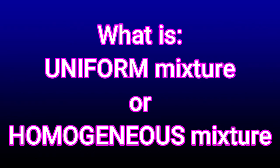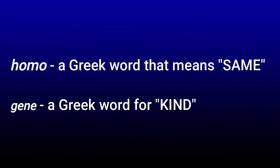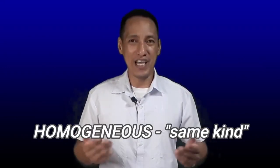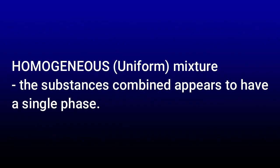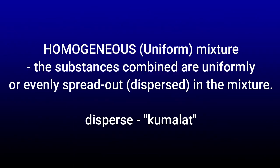What is a uniform or homogeneous mixture? Homo is a Greek word meaning same, and gene is another Greek word that means kind. So homogeneous means the same kind. Homogeneous mixture is a type of mixture that, after mixing, all the substances combined appear like one or a single kind of substance. It is called uniform mixture because the different substances combined are uniformly or evenly and totally spread out inside the mixture.